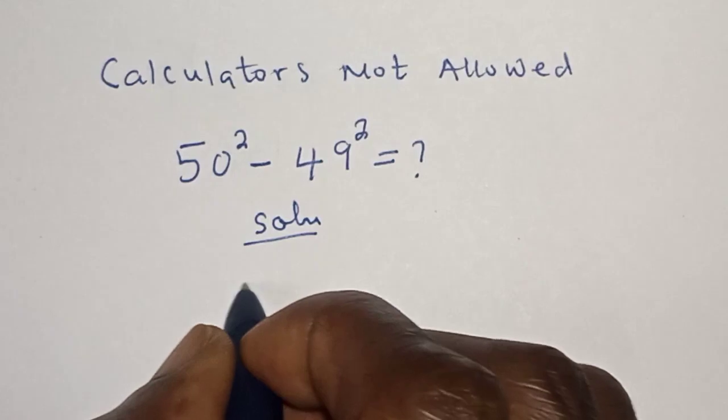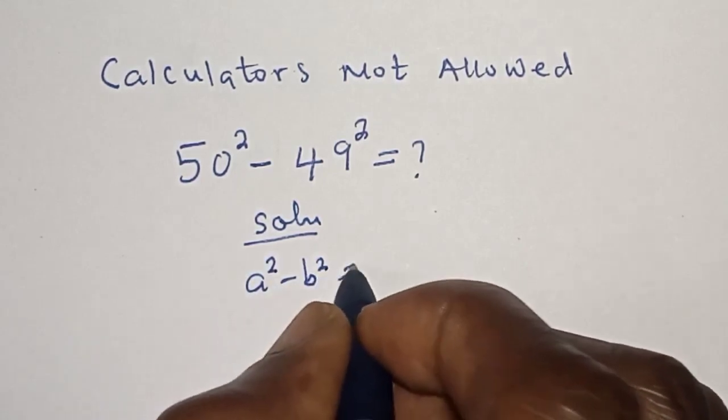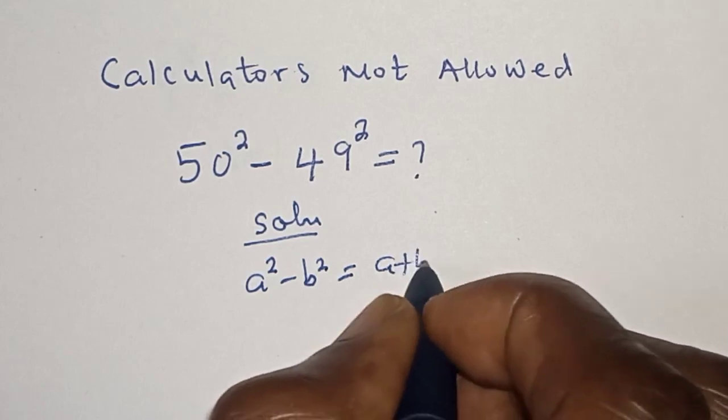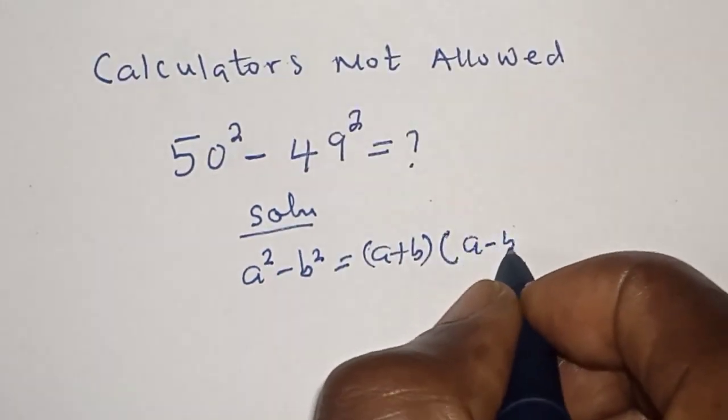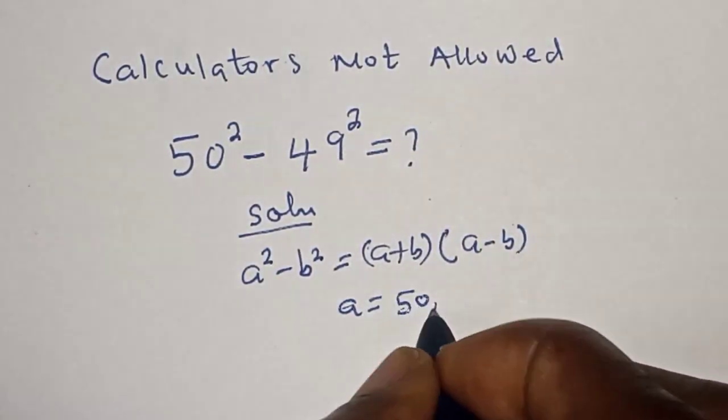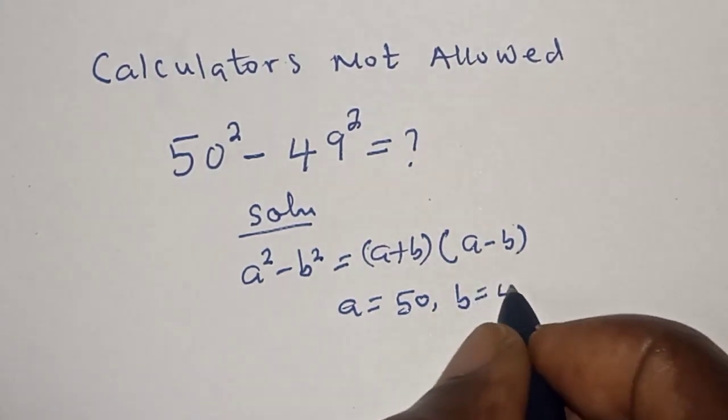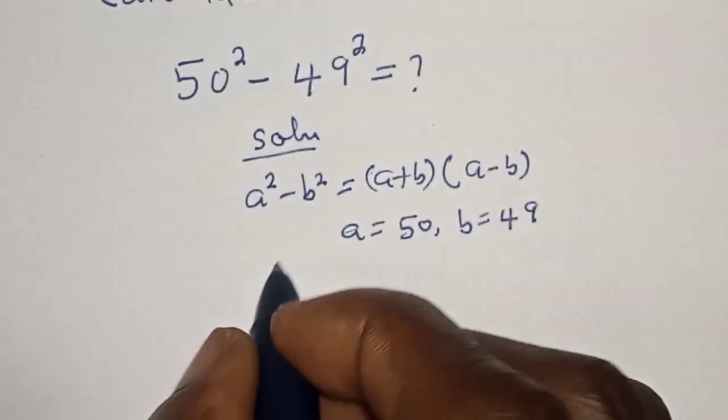Take note of this rule that a squared minus b squared is equal to (a plus b) bracket (a minus b). Then a is equal to 50, b is equal to 49. So let's substitute.